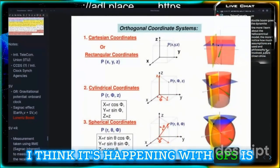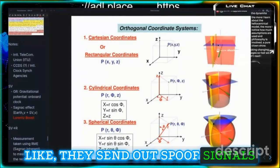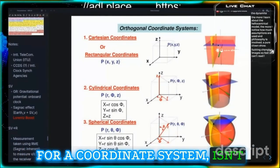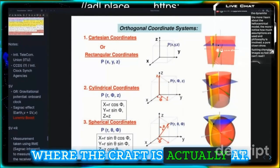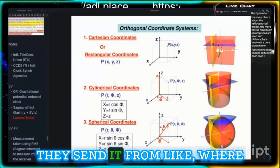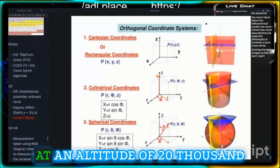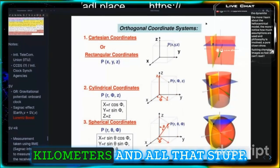I think what's happening with GPS is they send out spoof signals for a coordinate system that isn't where the craft is actually at. They send it from like where it would be if it was actually at an altitude of 20,000 kilometers and all that stuff.